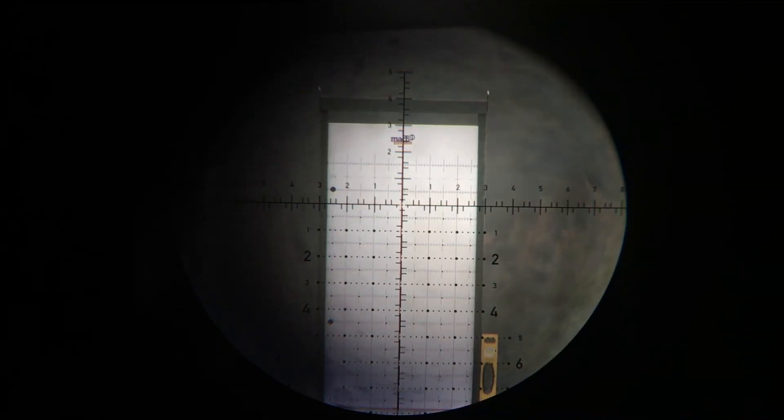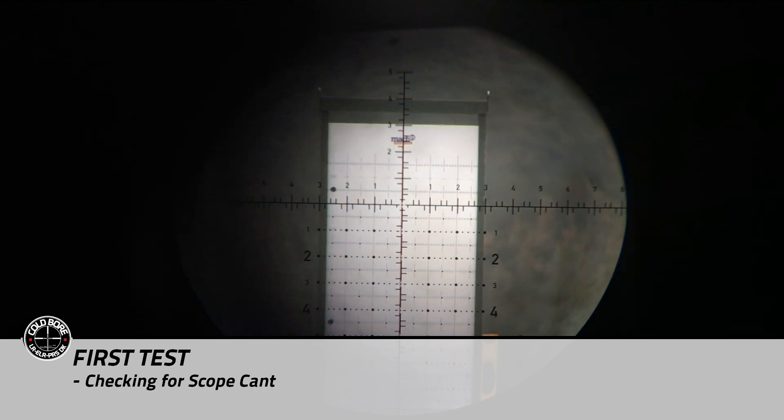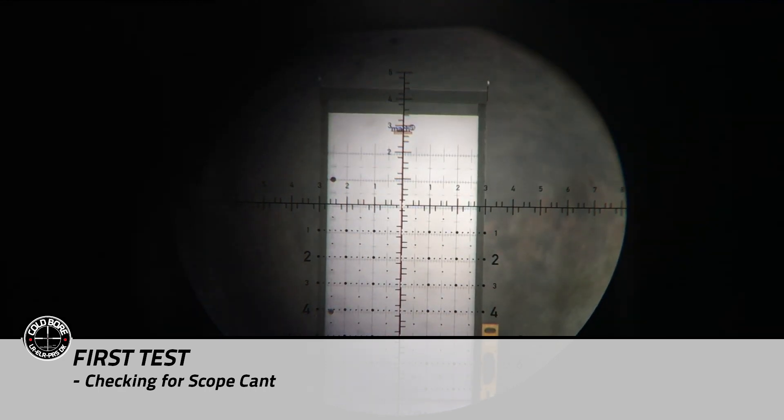The Tall Target Test gives you two things. The first thing is that it checks your cant of your scope to see if you have leveled your scope completely vertical and if not just loosen the screws and adjust for the cant.